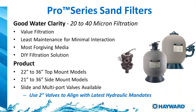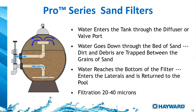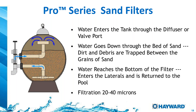Looking more in depth at our Pro Series sand filters: we have top mount or side mount valves available, all the way up to 36 inch. For commercial installations or pools requiring larger flow, you can do a 36-inch sand filter with a top mount to save space in the equipment room. Here we can see how a normal sand filter works: water from the pump goes on top of the sand via a diffuser, spread evenly across the sand bed, and at the bottom the laterals — or finger-style laterals — return all that clean water back into the pool after the filtration process.